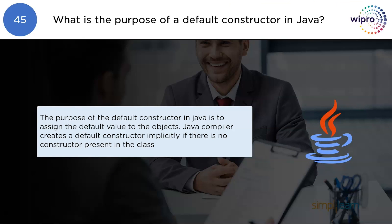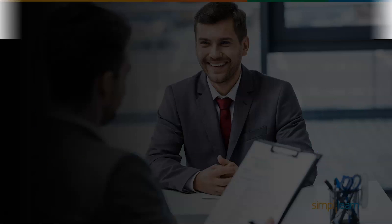What is the purpose of a default constructor in Java? The purpose of a default constructor in Java is to assign default values to objects. The Java compiler creates a default constructor implicitly if there is no constructor present in the class.